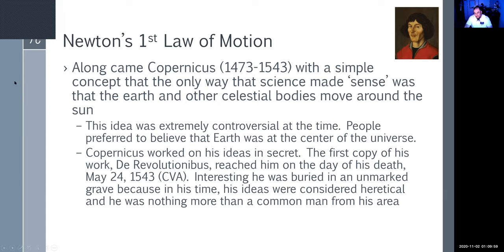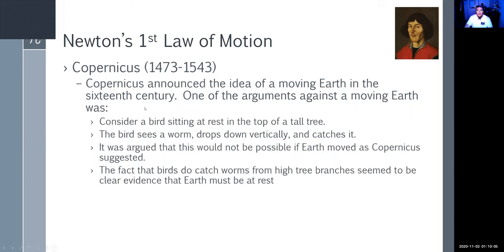One of the main arguments against a moving earth was: if you consider a bird sitting at rest on top of a tall tree, the bird sees a worm, drops down vertically, and catches it. If we were on a moving earth, that bird would have missed the worm. Birds do catch worms from high tree branches, so people said this was proof the Earth is at rest. But what was really proven is that we didn't yet understand mass momentum and inertia.